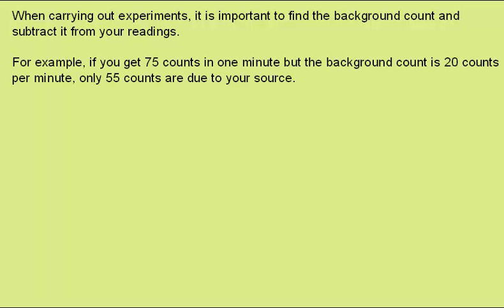For example, if you record 75 counts in one minute but the background count is 20 counts per minute, then only 55 of those counts are due to your source. The corrected count will be 55.